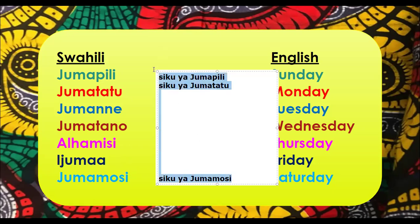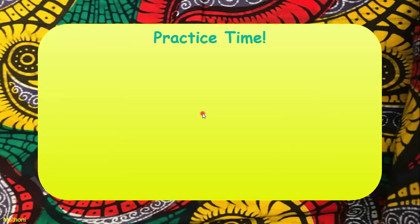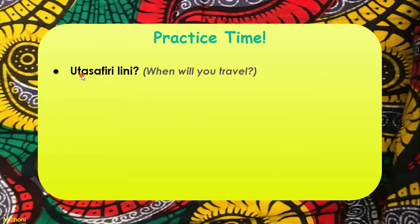But the longer form is a lot of work, so let us focus on the short form. It's short and easy to use. Now let us go to the next part — practice! The first thing on our practice board is Utasafiri lini? Remember from our vocabulary list, Safiri is to travel. Utasafiri — you will travel. Lini — when. So: when will you travel?